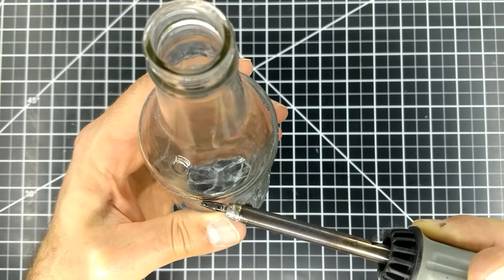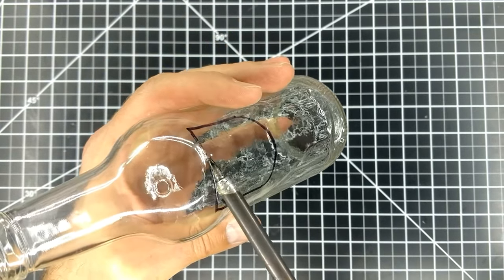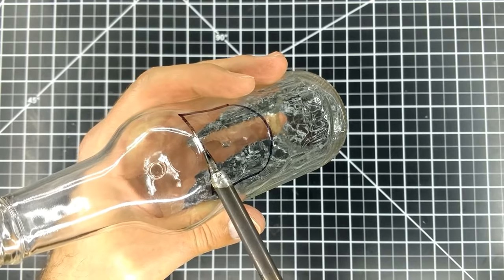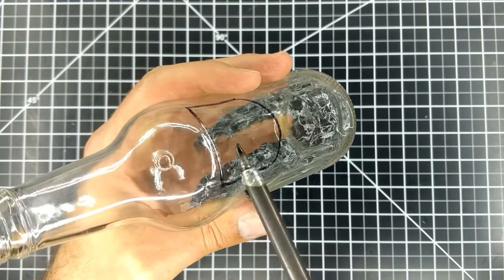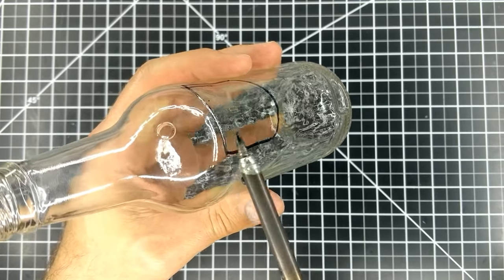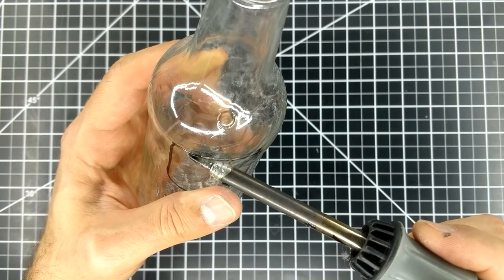If the crack hasn't started after a couple of inches, stop and heat the score line in the opposite direction. Continue that process, heating each spot slightly longer each time until the crack starts.